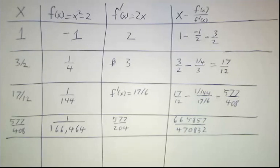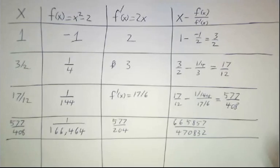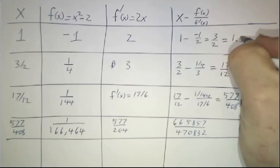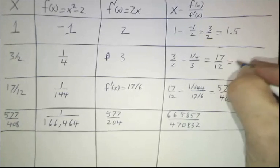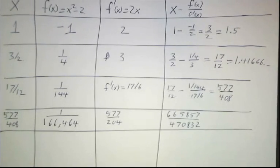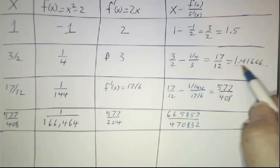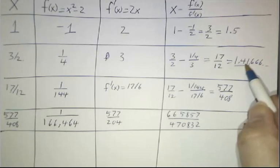But now we've got something that is actually really accurate. If we do this in decimals, this is 1.5. Our next guess was 1.41666. That's good to two decimal places. The square root of 2 is actually closer to 1.414. So the first two decimal places are good.